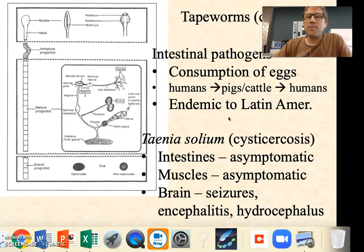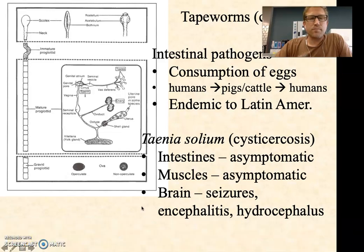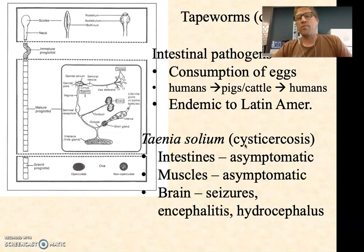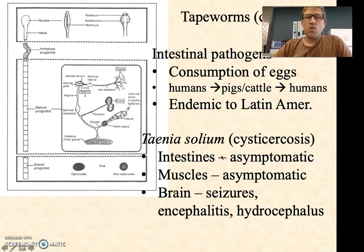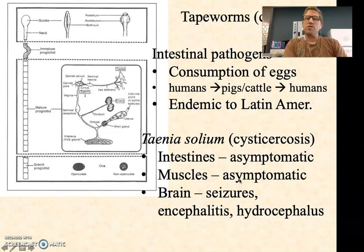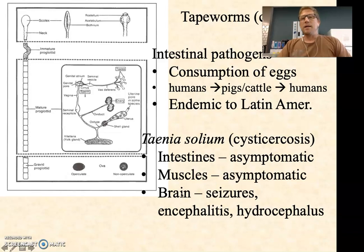These are endemic to Latin America but can be found in a couple of other places as well. A good example is Taenia solium, which causes a disease called cysticercosis, with very high numbers in the hundreds of millions of cases globally. When they're in the intestines, typically they're asymptomatic unless there are so many that physical blockage occurs. They can move into the muscles and sometimes be seen in muscle tissue. When they get into the brain, we see seizures, encephalitis, and hydrocephalus, which can cause really severe disabilities.